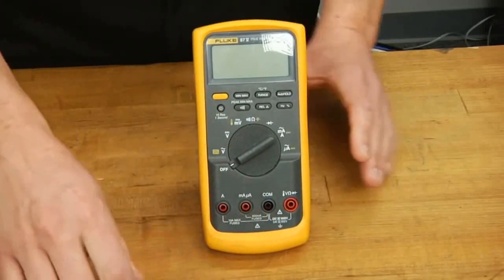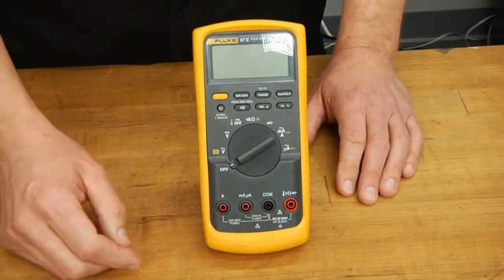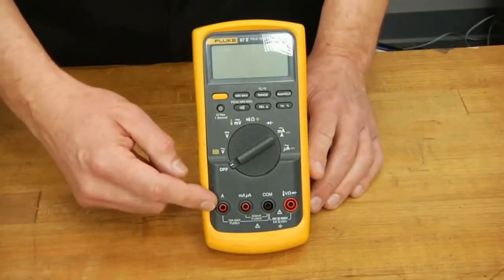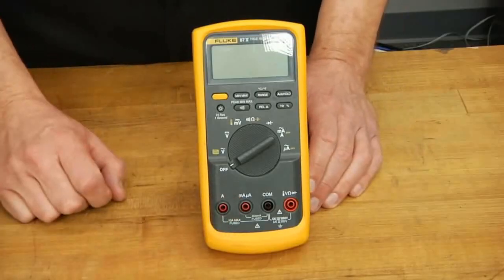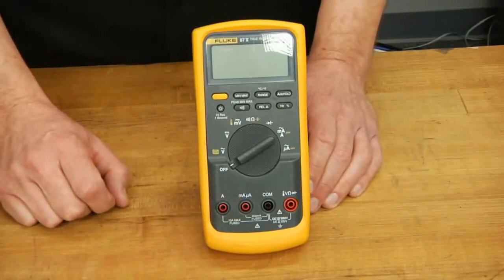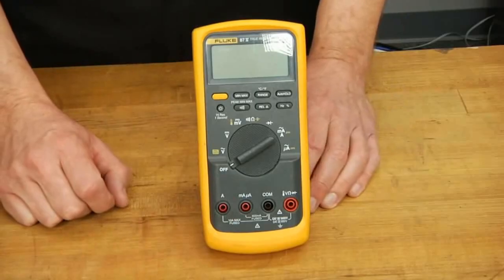Let's talk about the fuses. The two fuses are a 10 amp fuse to protect the amp terminal and a 400 milliamp fuse to protect the milliamp microamp terminal. If you exceed those ratings, the fuse will blow and the meter will not work.